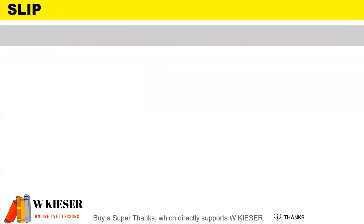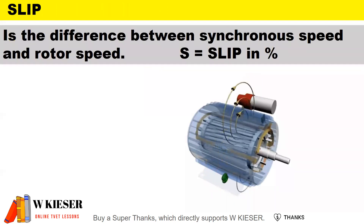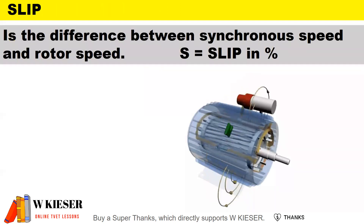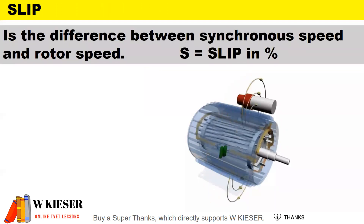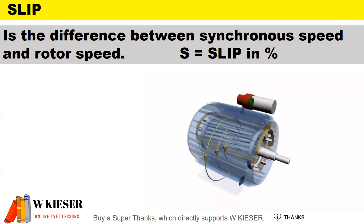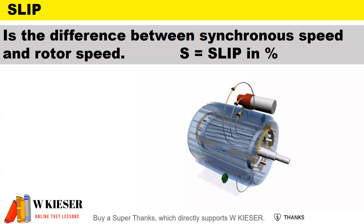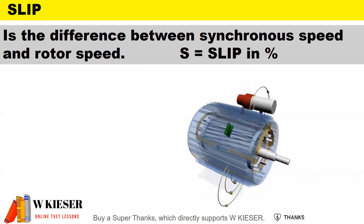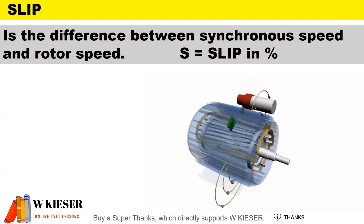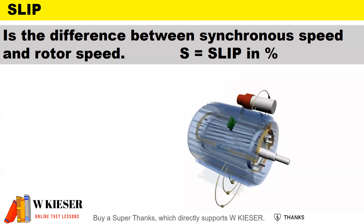To define the term slip: slip is the difference between synchronous speed and rotor speed — in other words, the speed of the rotating magnetic field versus the speed of the rotor. In order for EMF to be generated, there needs to be a difference in speed between synchronous speed and rotor speed, and this is represented as a percentage called slip.